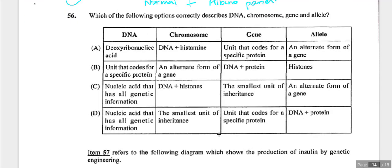Question fifty-six asks for correct descriptions of DNA, chromosome, gene, and allele. DNA is the nucleic acid carrying all genetic information — not just a single unit coding for one protein. A chromosome is DNA plus histones. A gene is the smallest unit of inheritance. An allele is an alternate form of a gene. Answer is C.